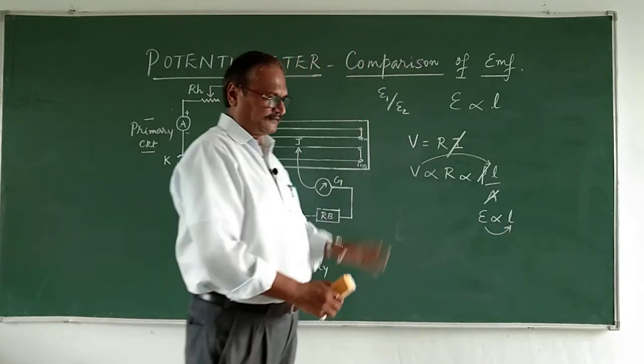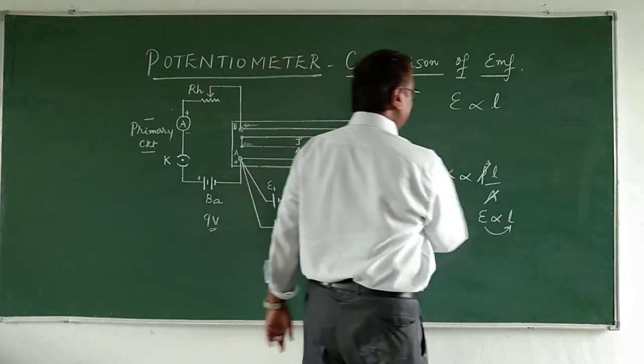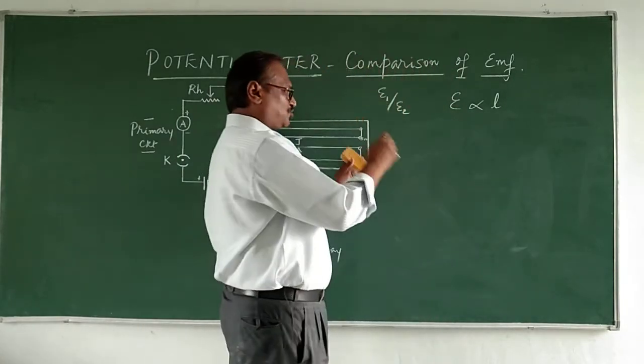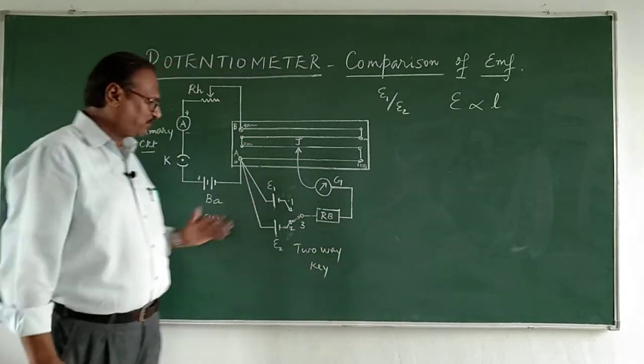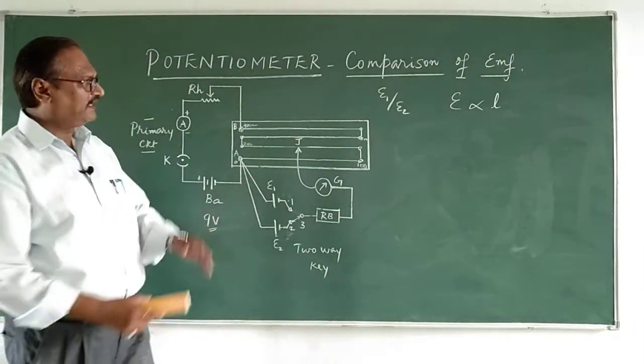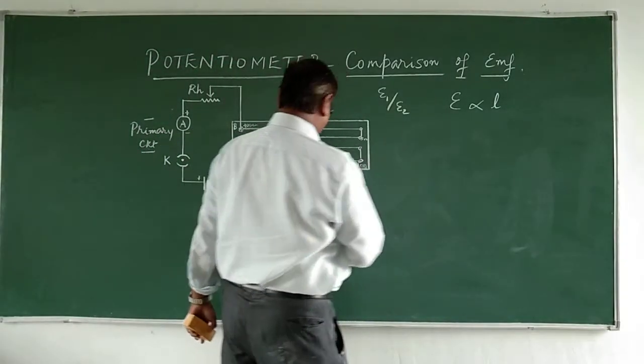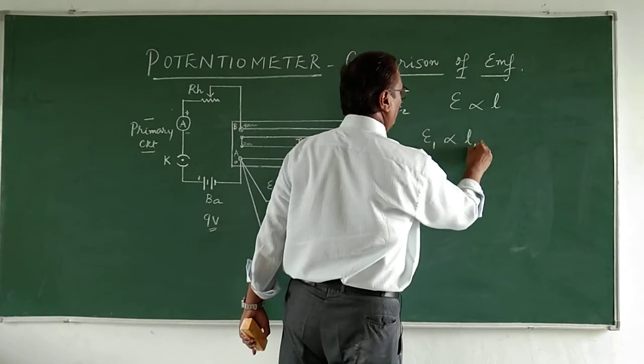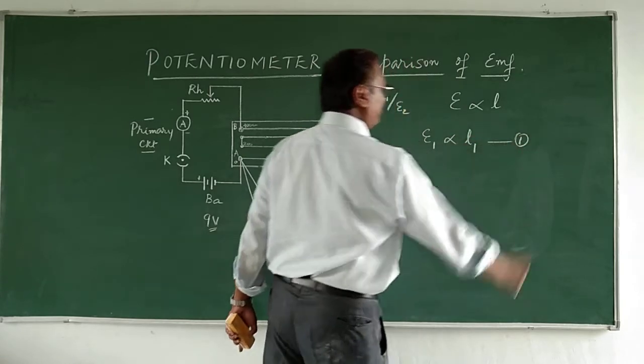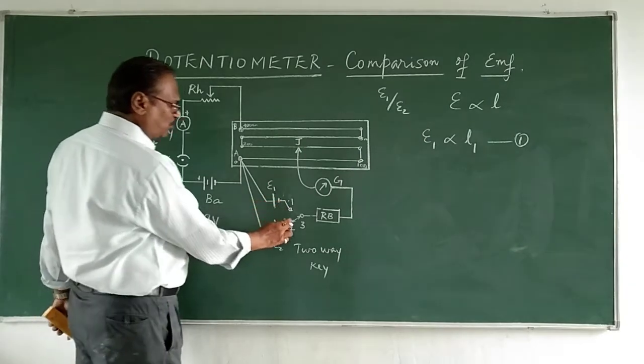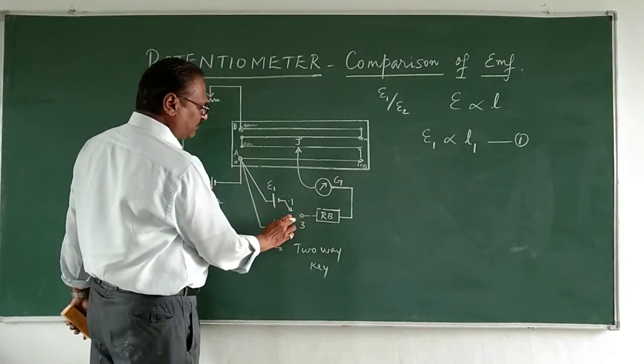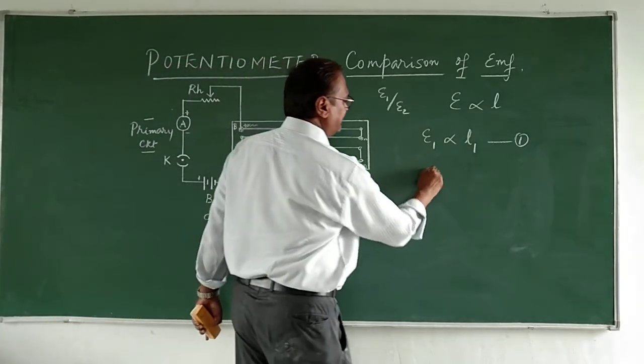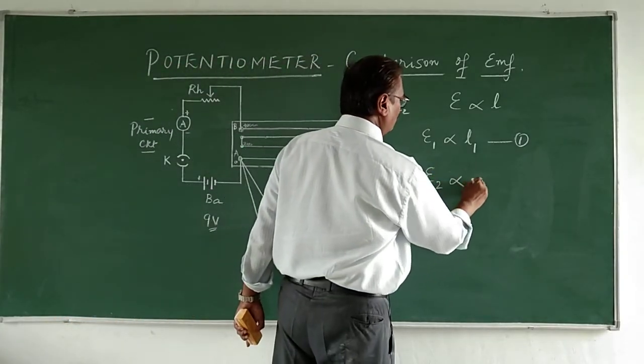For practical purposes, we can simply say epsilon is proportional to L. That is the basic principle formula which we are going to use. Now, as I said before, we bring cell 1 into the circuit, so epsilon 1 will be proportional to L1. Call this equation number 1. Now 2 and 3 are connected together.